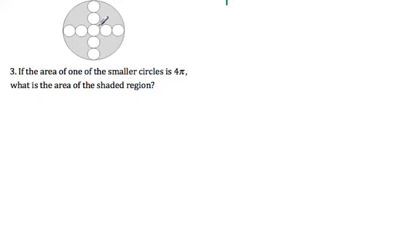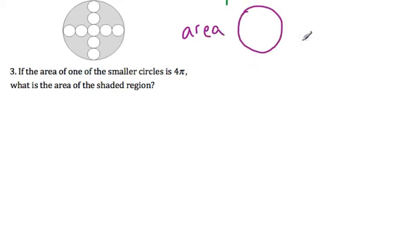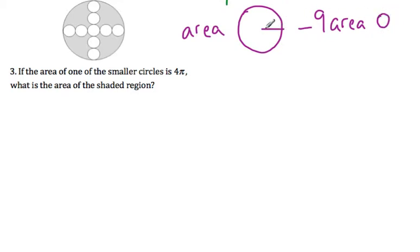To find the area of the shaded region, we need to take the area of the big circle minus nine times the area of the little circle. There are nine small circles in total.